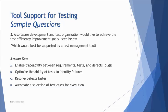Number three, a software development and test organization would like to achieve the test efficiency improvement goals listed below. Which would be the best supported by the test management tool? So we have four options: enable traceability between requirements, tests, and defects; optimize the ability of tests to identify failures; resolve defects faster; or automate a selection of test cases for execution. From the special consideration of test management tool section, we have understood that when you have a test management tool within your organization, it basically allows you to have traceability between the different components and testware within the entire process. So A would be the most relevant option, which would be best supported by a test management tool.